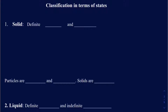Some of you are probably already familiar with these different states. The first one is a solid. In a solid state you have a very definite shape and volume — a well-defined shape and volume. Examples include a pen, a book, or even ice. They are all examples of the solid state because they have a well-defined shape and volume.